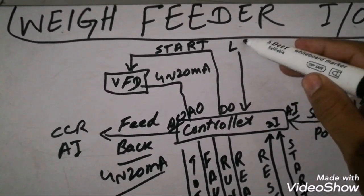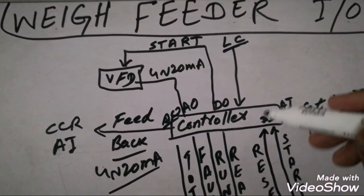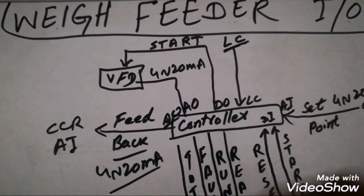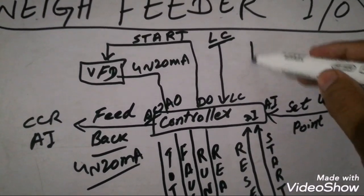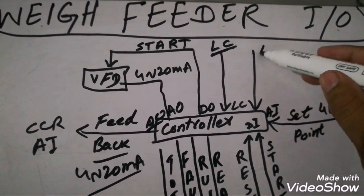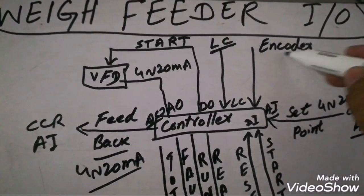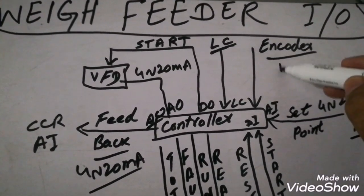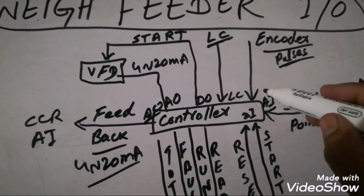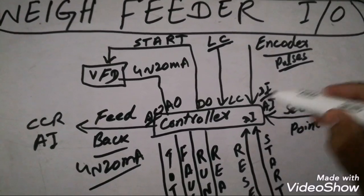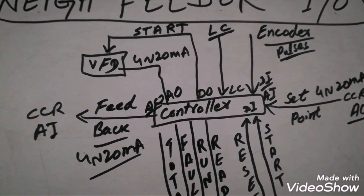The load cell cables are connected to the controller, providing excitation and signal inputs. The encoder input, which is in pulses, is also an input to the controller. This is a digital input on a specific high-speed channel because the encoder pulses are high speed.